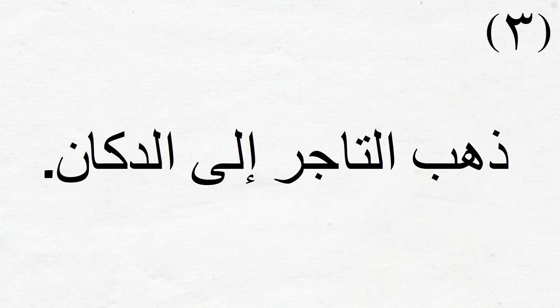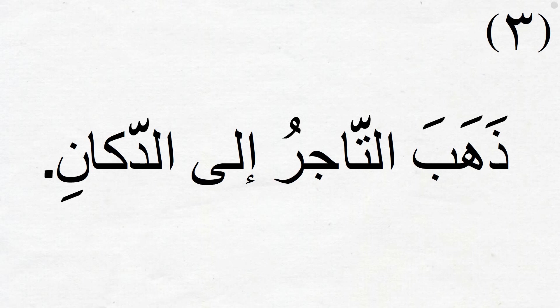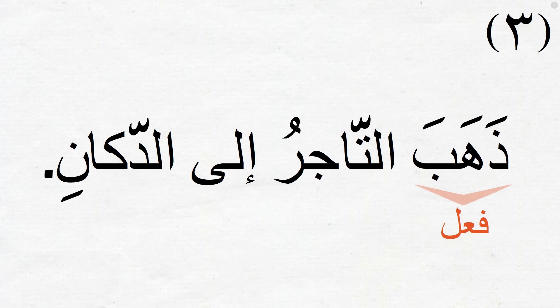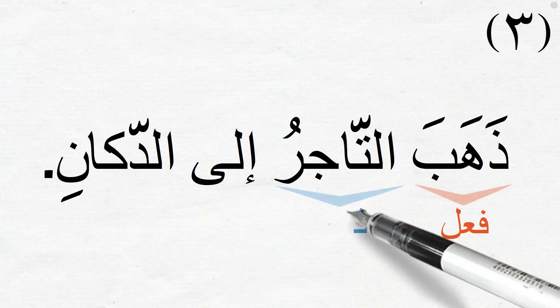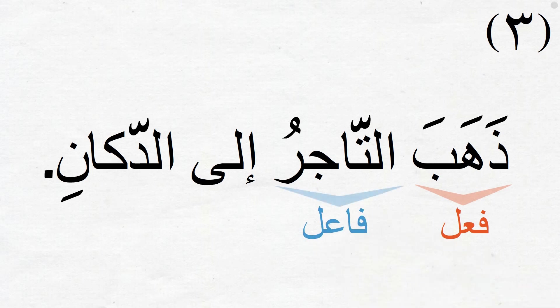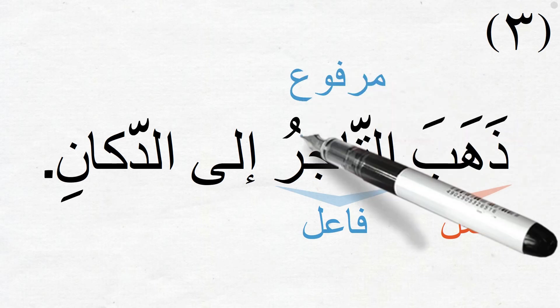Third sentence: ذهب التاجر إلى الدكان — 'The trader went to the store.' This is another fi'aliyya sentence. The fi'al is ذهب and the fa'al, the doer, is التاجر. Again, the fa'al is coming as marfu' as we expect.